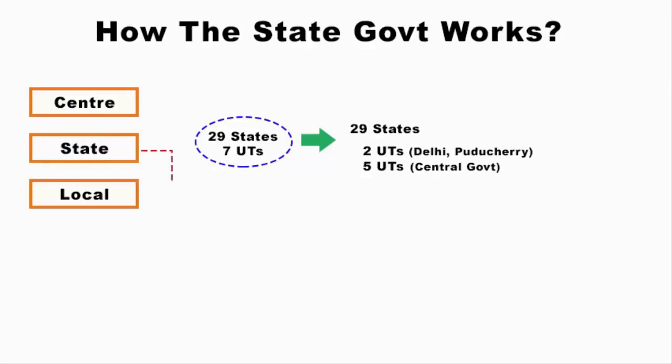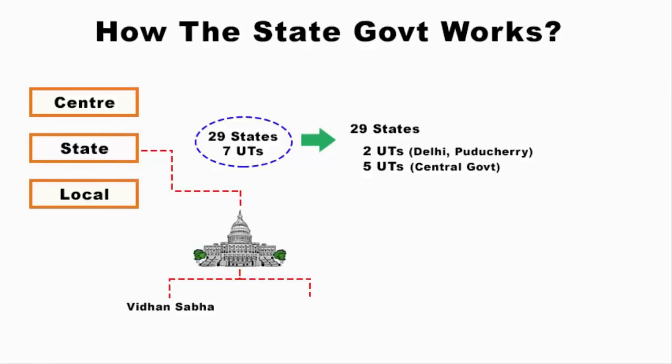The first thing you need to understand is that the state legislature has two houses. They are called Vidhan Sabha and Vidhan Parishad — just like at the central level, Parliament has two houses: Lok Sabha and Rajya Sabha. Similarly, at the state level, there are two houses: Vidhan Sabha and Vidhan Parishad. But here is a catch: not every state in India has a bicameral legislature.